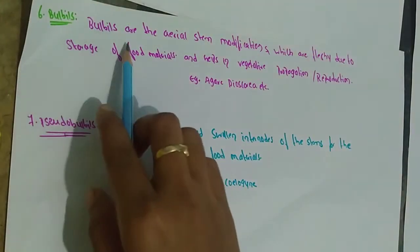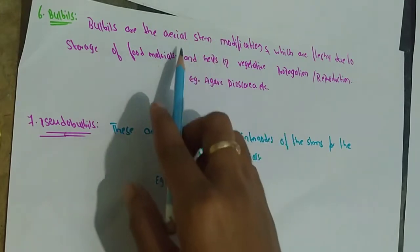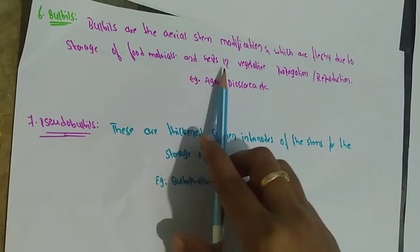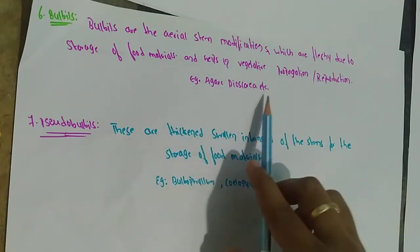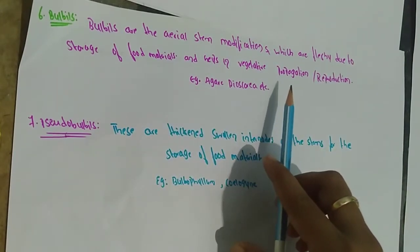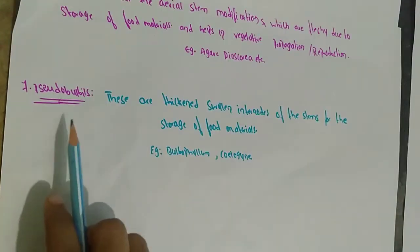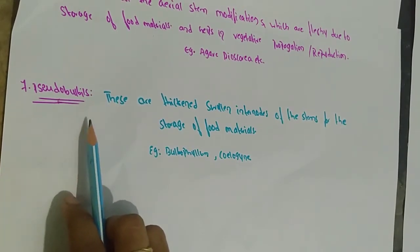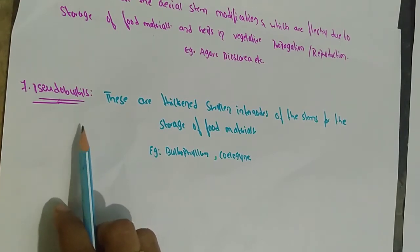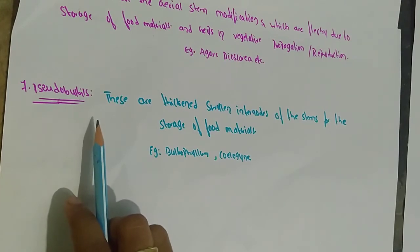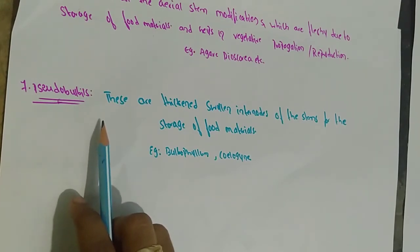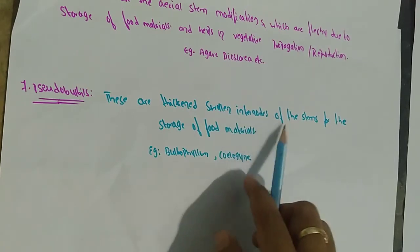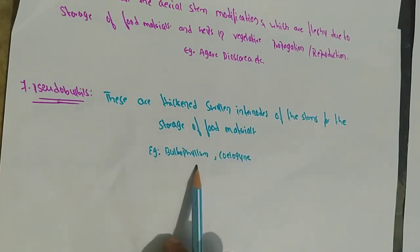Bulbils are aerial stem modifications. They are bulb-like, fleshy structures due to the storage of food materials, and they help in vegetative propagation. Vegetative propagation means that if any part of a plant is cut, that part can grow into a new plant. Examples are Agave and Dioscorea. Bulbils represent a gametophytic outgrowth, sometimes replacing ordinary sporangia. They are thickened, small internodes of the stem enlarged due to food storage. Example: Bulbophyllum.